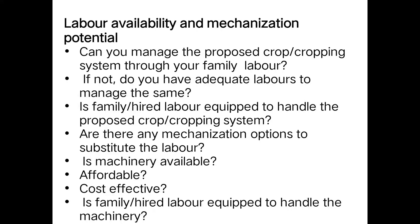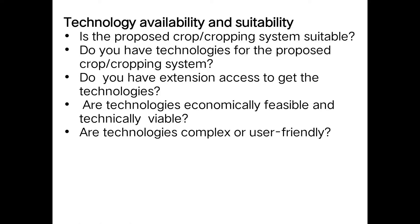Labor availability and mechanization potential are also key considerations. The farmer must determine whether they can manage the proposed crop or cropping system through family labor, whether adequate hired labor is available, whether there are mechanization options to substitute labor, whether machinery is available and affordable, whether it is cost-effective, and whether family or hired labor is equipped to handle the machinery.